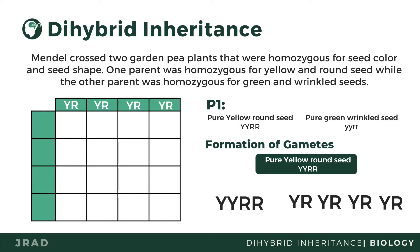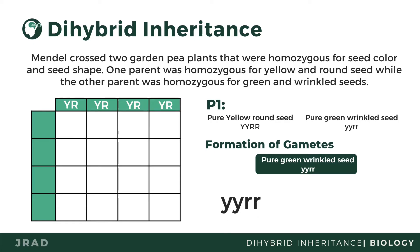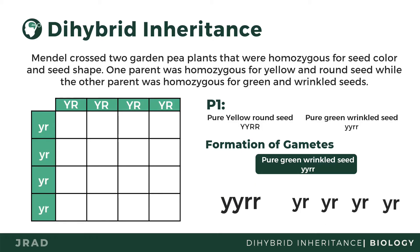Let's try to FOIL the second parent. The second parent is pure green wrinkled seed, which is lowercase y, y, r, r. Applying FOIL — First, Outer, Inner, and Last — we get these gamete combinations, which we can write on the left side of the squares. Notice that the gametes are the same because it is what the parents can contribute in the formation.